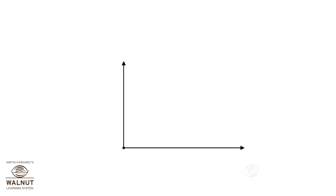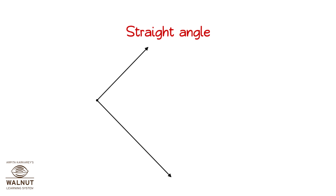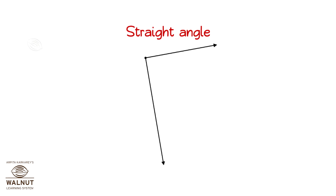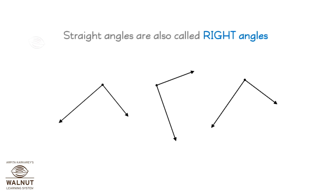It can be like this. You can see that this is an angle, and it is a straight angle. The angle formed is like the corner of a square or a rectangle. This is a straight angle too, and so is this one, and this one too. Straight angles are also called right angles.